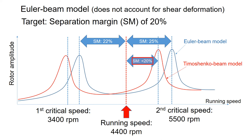Since the Timoshenko beam model reflects reality more accurately than the Euler beam model, it is recommended to use the Timoshenko model over the Euler model if you have a choice. In this particular case, when your separation margin is less than 20%, you need to find a way to stiffen the rotor to increase the natural frequency so that you have enough separation margin from the second critical speed.